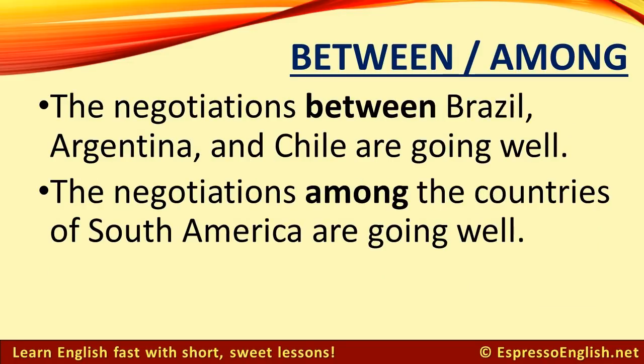Here's an example. The negotiations between Brazil, Argentina, and Chile are going well. The negotiations among the countries of South America are going well. In the first example, we use between with three items, but we name each of the three things individually. In the second sentence, we use among because we refer to the countries as a group.